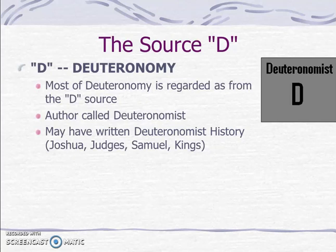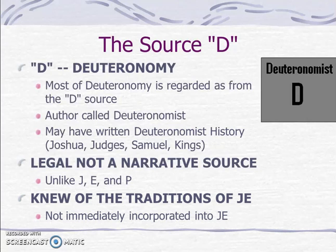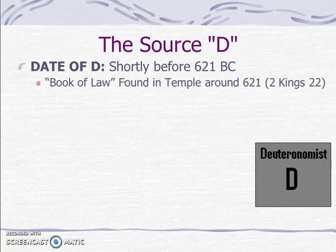Then comes the source D, which basically means Deuteronomy. Most of Deuteronomy is regarded as from the D source; the author is called the Deuteronomist. He may have also written what is called the Deuteronomistic history, which is Joshua, Judges, Samuel, and Kings. D is a legal source rather than a narrative source, unlike J, E, and P. The date of D is shortly before 621 B.C. According to Wellhausen, in 2 Kings 22, when they discovered the book of the law in the temple, what they really discovered was the book of Deuteronomy.